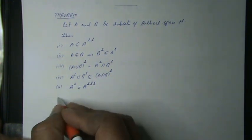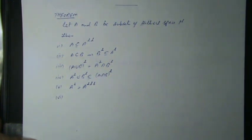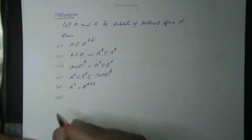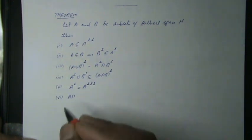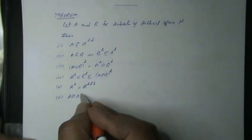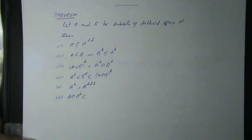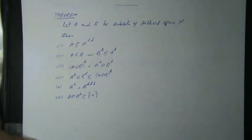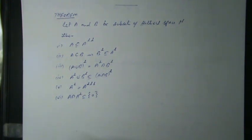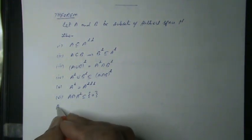Sixth, A intersected with the annihilator of A is contained in the singleton set consisting of zero.